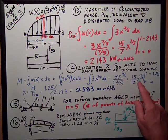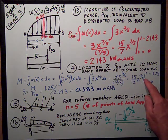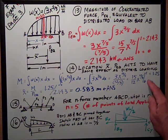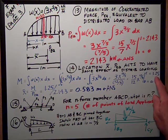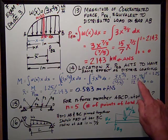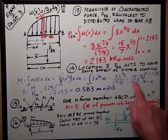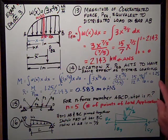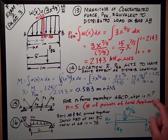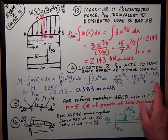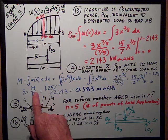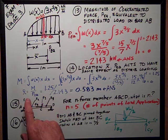Makes it 3x to the twelve-fifths over twelve-fifths. So, rearrange that, I get 15-twelfths x to the twelve-fifths power, evaluated at zero, it's zero. Evaluated at x equals 1, this x to the twelve-fifths is still 1, so it's 15-twelfths or 1.25. That's kilonewton meters, because it's a moment.